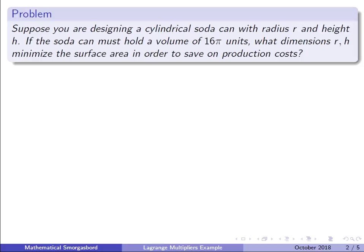In this problem, you are designing a cylindrical soda can with radius r and height h. If the soda can must hold a volume of 16π units, what dimensions r and h minimize the surface area in order to save on production costs?